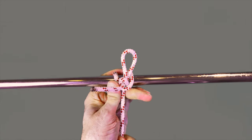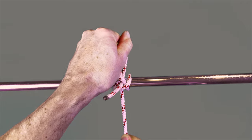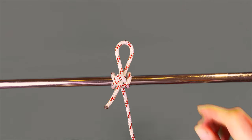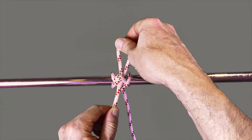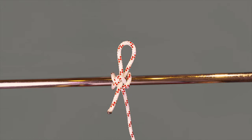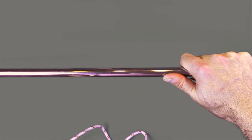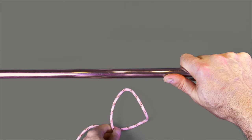The highwayman's hitch will tighten under load but has a fantastic quick release feature where the knot can be undone completely from the item it's hitched around with one simple pull from the working end.